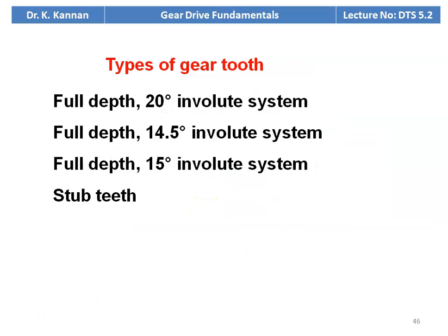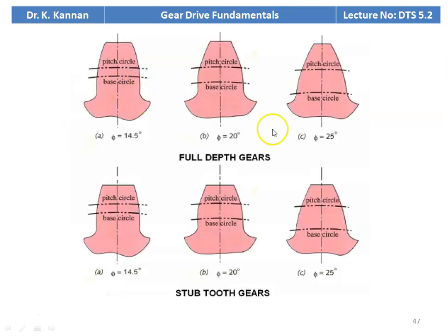The types of gear tooth: full depth 20 degree involute system, full depth 14.5 degree involute system, full depth 15 degree involute system, and stubbed teeth. The majority of tooth profiles are involute, so we design only with the involute profile. Unless otherwise mentioned in the problem, we normally use the full depth gear with 14.5 or 20 degree pressure angle.